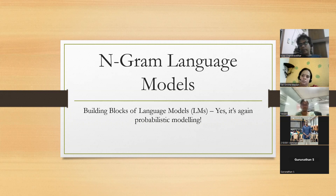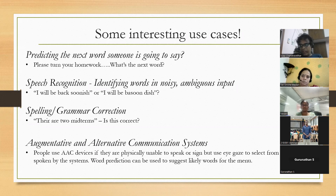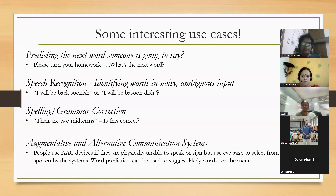We'll deal with conditional probability again — it will keep popping up. Some interesting use cases: when you use your mobile phone and type something, you see those autocomplete options. How do you think they come up? It's not magic — there's some model running behind the scenes that allows you to correct your spelling, sometimes your grammar, etc.